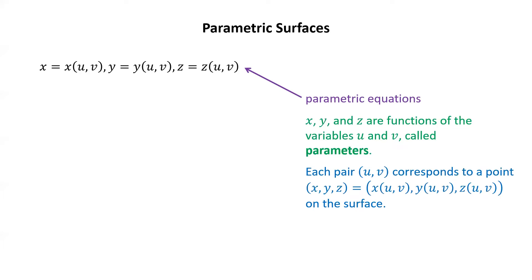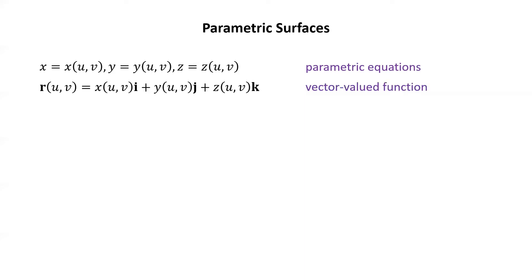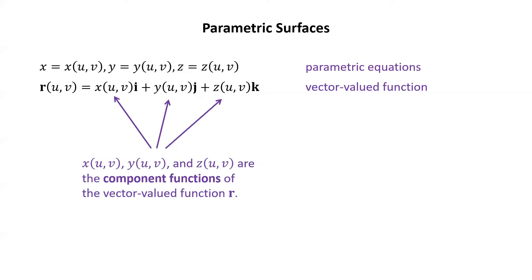Each pair (u,v) corresponds to a point (x, y, z) equals (x of uv, y of uv, z of uv) on the surface. We could turn these three parametric equations into a single equation by using a vector-valued function. Here we have the single vector equation r of uv equals x of uv i plus y of uv j plus z of uv k. x of uv, y of uv, and z of uv are known as the component functions of the vector-valued function r.